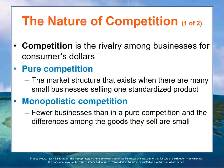Competition drives this kind of behavior because in order to succeed, you have to give the customers what they want at a reasonable price. With a free enterprise system, there are four types of competitive environments: pure competition, monopolistic competition, oligarchy, and monopoly. Pure competition is the market structure that exists when there are many small businesses selling one standardized product. No one business sells enough of the product to influence the market's price, and because there's no difference in the products, prices are determined solely by the forces of supply and demand.